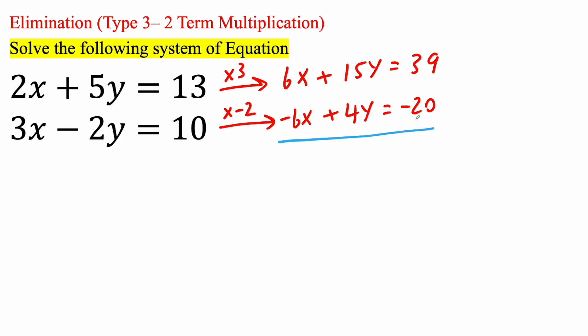Next, we're going to combine, and that's where we're going to see this is called the elimination method. 6x minus 6x, they cancel out. It gets eliminated. 15y plus 4y will give us 19y is equal to 39 minus 20 is going to give us 19.